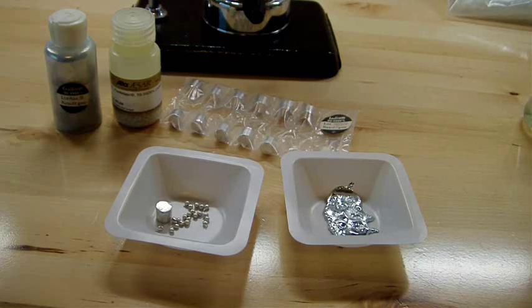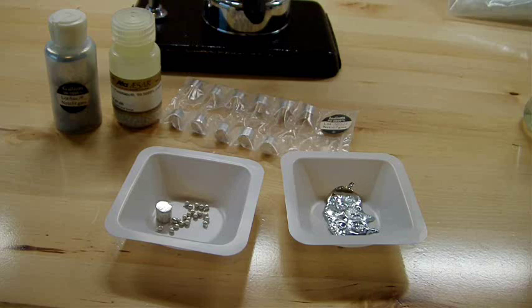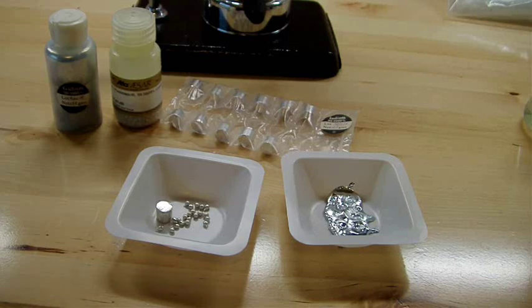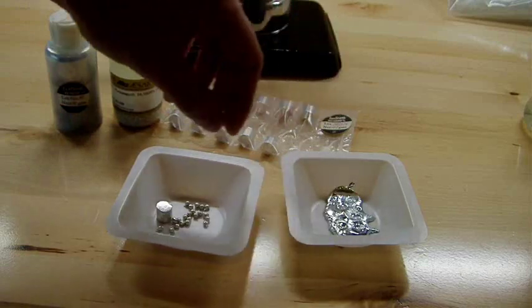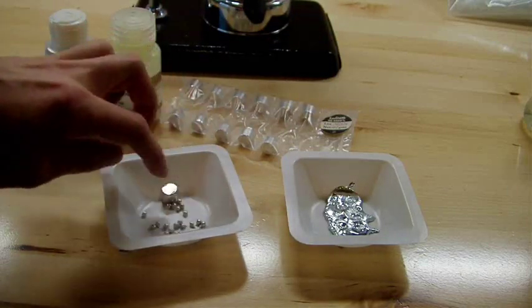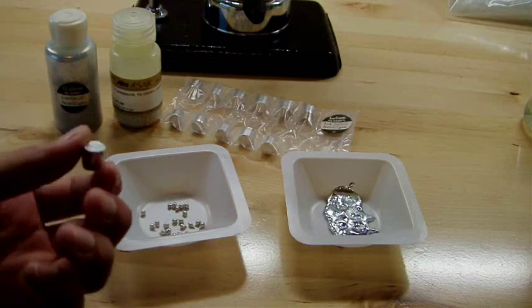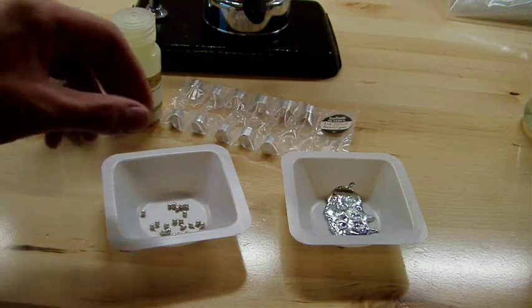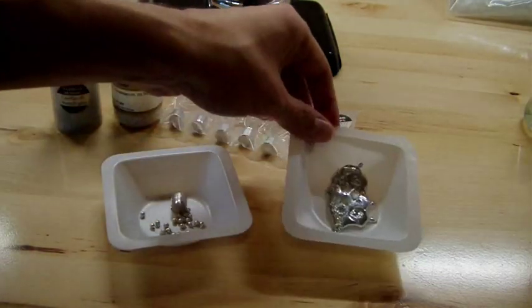So the composition of Galinstan is 68.5% gallium, 21.5% indium, and 10% tin, which I have laid out here. The tin is these little pellets, indium is the larger slug, and the gallium is what I have over here.